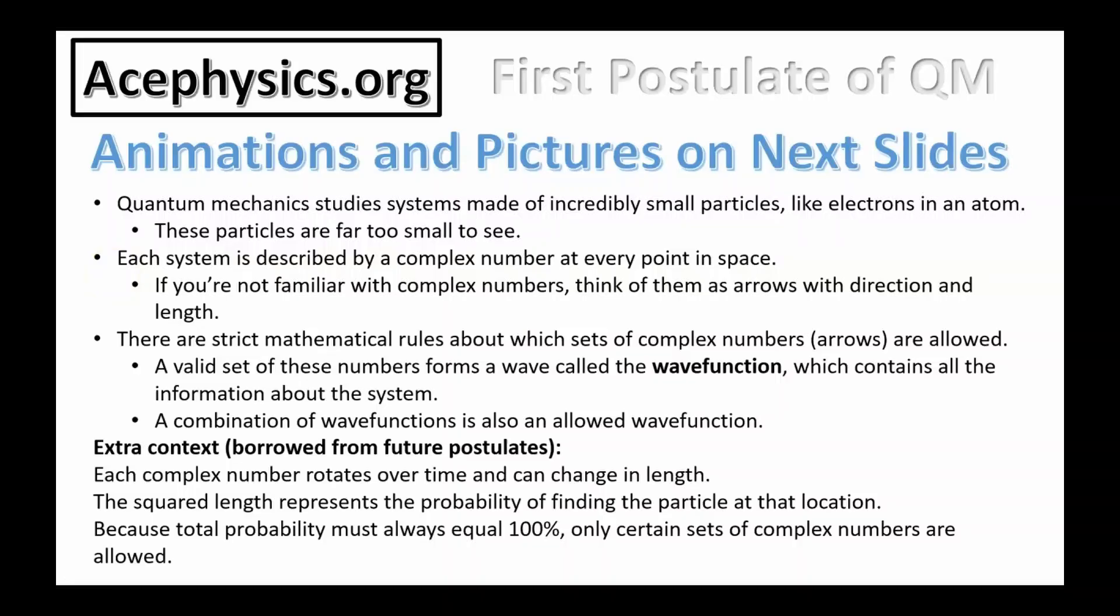If you're not familiar with complex numbers, think of them as arrows with direction and length. That's what a complex number is. There are strict mathematical rules about which set of complex numbers are allowed. A valid set of complex numbers forms what we call a wave function.